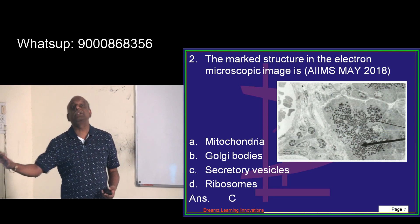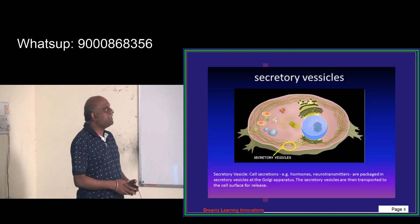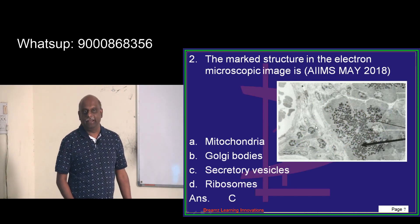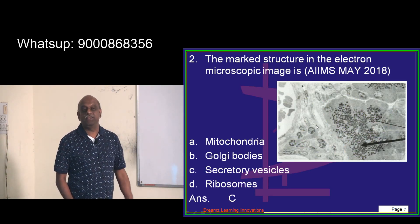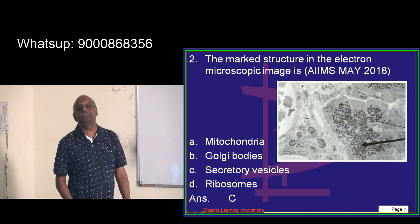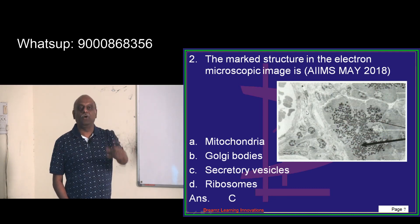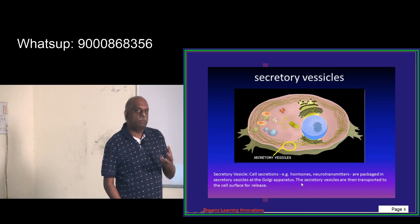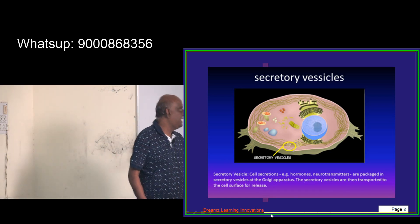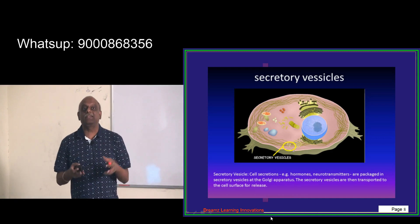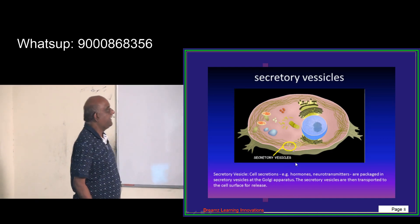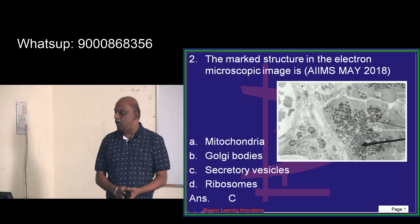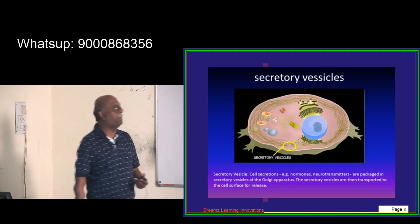The structure shown is secretory vesicles. All subcellular organelles should be recognized electron microscopically. Secretory vesicles carry hormones, neurotransmitters, and similar molecules — all packaged in the secretory vesicles in the Golgi apparatus. This is what they look like under electron microscopy.